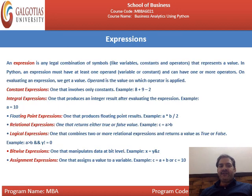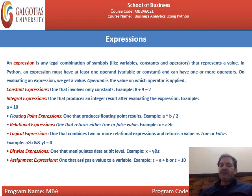Next are expressions. An expression is a legal combination of symbols like variables, constants, and operators that represents a value. In Python, an expression must have at least one operand — as we discussed with unary operators — and it can have one or more operators. On evaluating an expression, we get a value. The operand is the value on which the operator is applied. A constant expression is like writing A = B + C, for example 8 + 9 - 2.